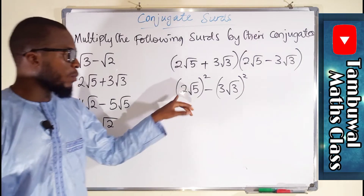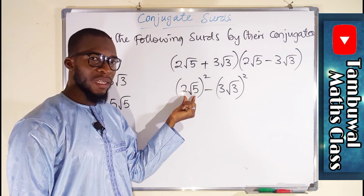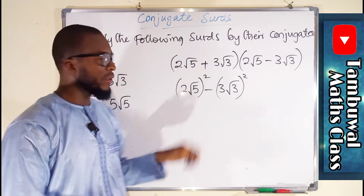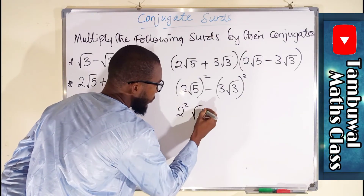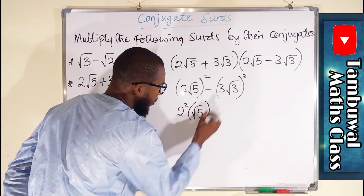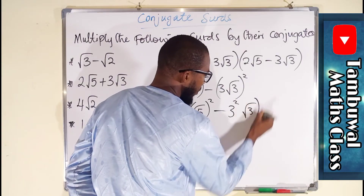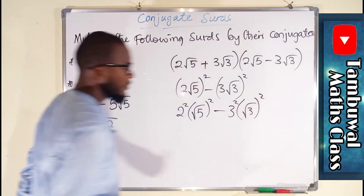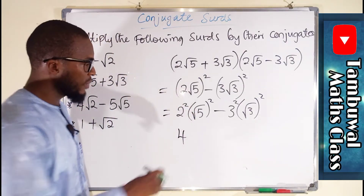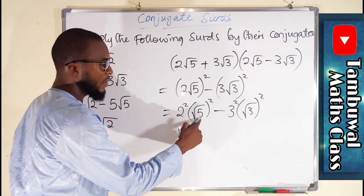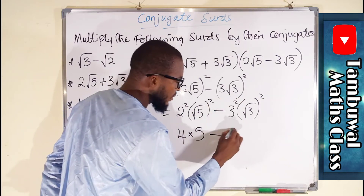This time around we have a mixed surd, so the power of 2 will affect everything — both the coefficient and the radical. This becomes 2² times (√5)² minus 3² times (√3)². So that is 4 times 5 minus 9 times 3.